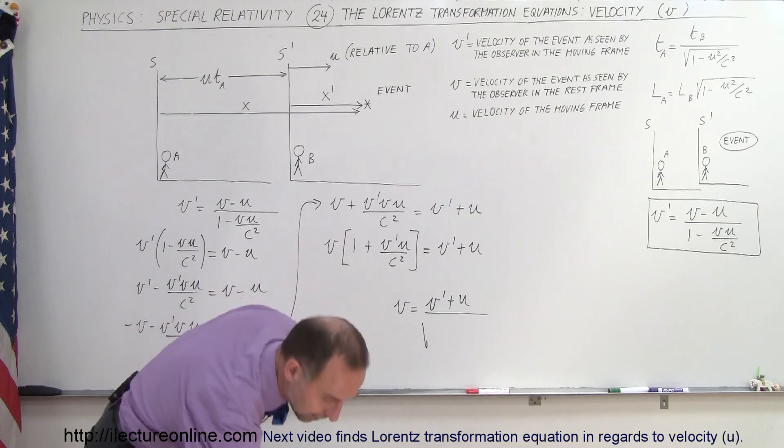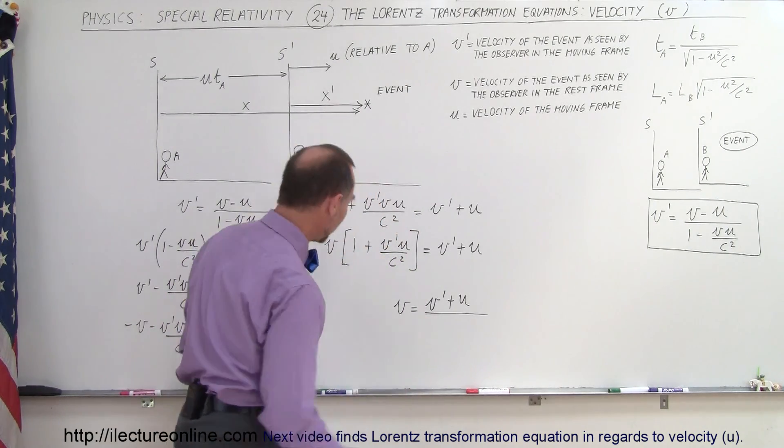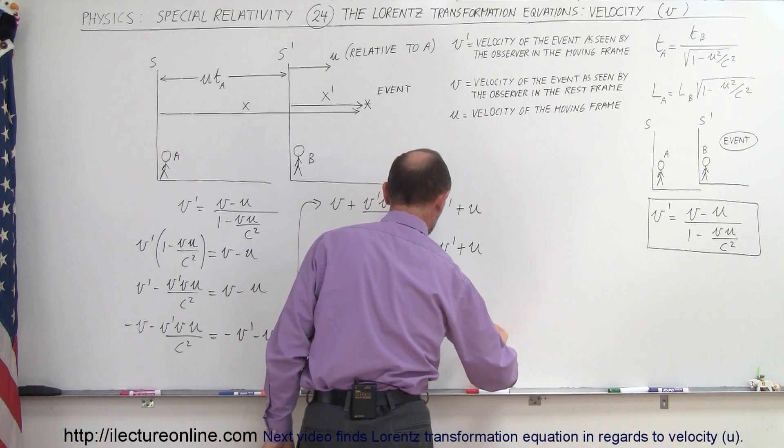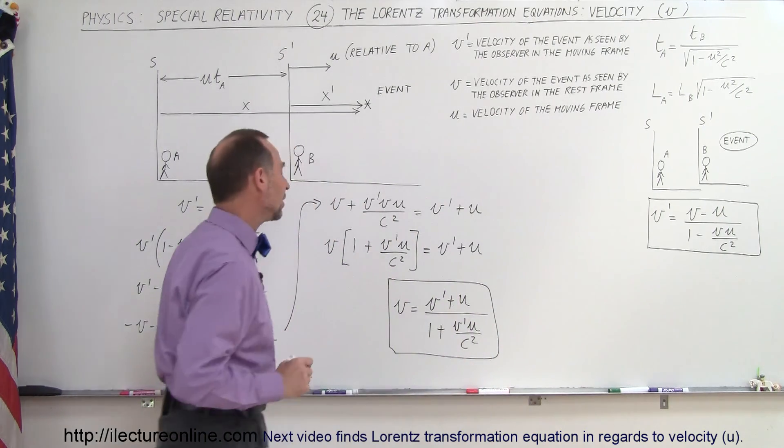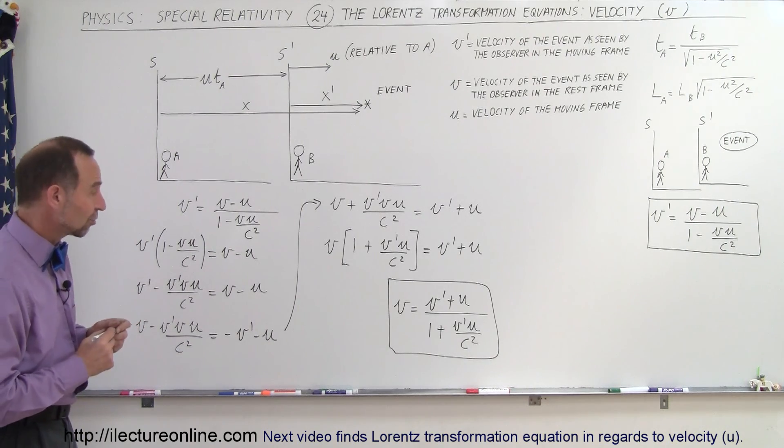Not the square root. I got carried away now. We don't need the square root. It's simply that quantity which is 1 plus V' U over C squared. And this will now become the second of the three velocity equations that we obtain by doing the Lorentz transformation.